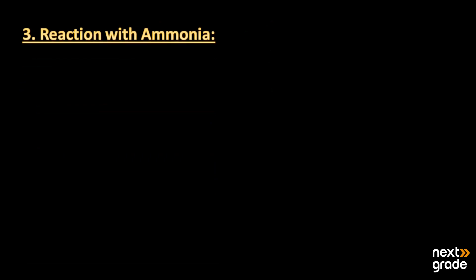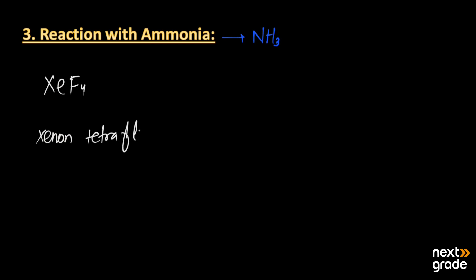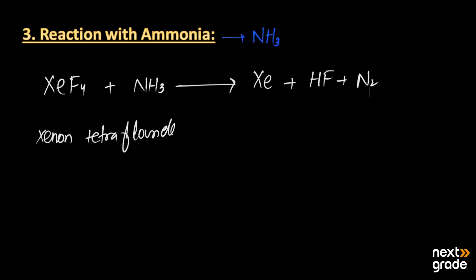After this, we have the reaction with ammonia. Ammonia is a gas with the formula NH3. Xenon tetrafluoride (XeF4), which has four fluorine atoms attached, reacts with ammonia (NH3) to produce xenon, hydrofluoric acid (HF), and nitrogen gas. Writing the physical states: XeF4 is solid, ammonia is gas, xenon is gas, HF is gas, and nitrogen is also in the gaseous phase.